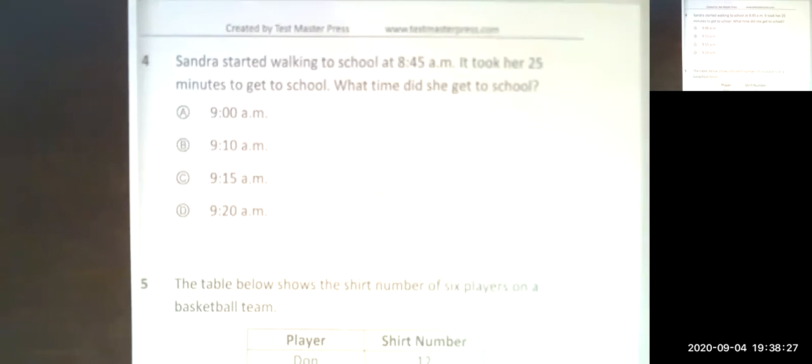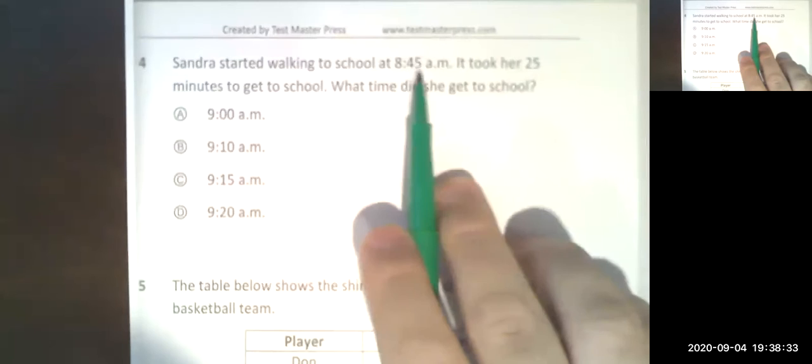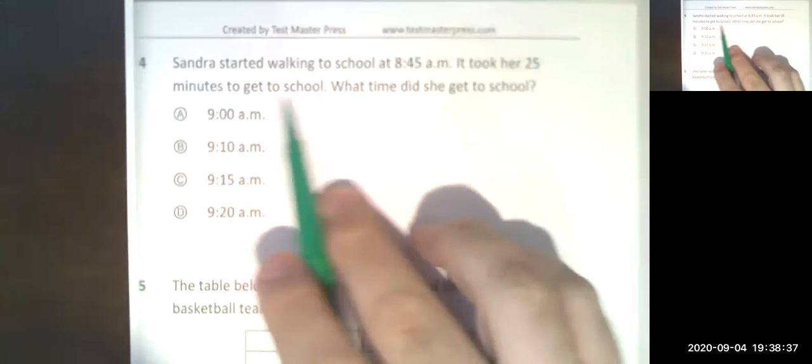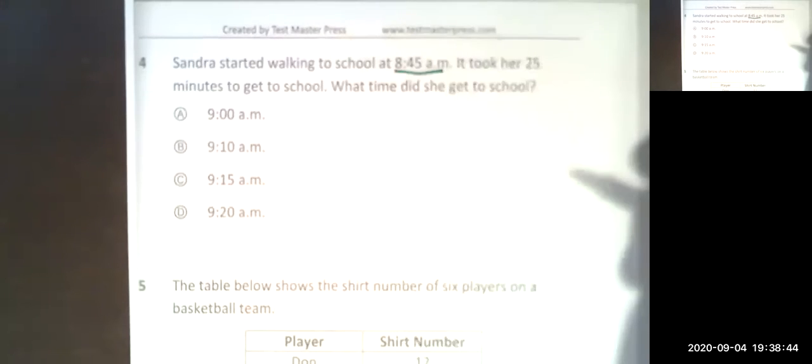Hey guys, wanted to review the answers for number four and five with you. Number four says Sandra started walking to school at 8:45 AM, that means in the morning. It took her 25 minutes to get to school. What time did she get there?